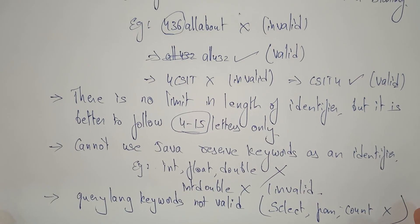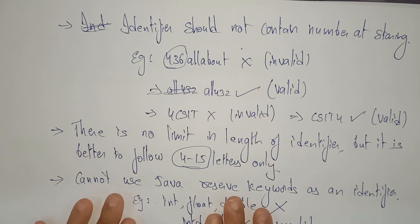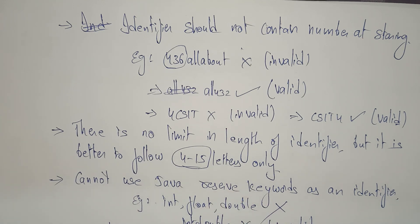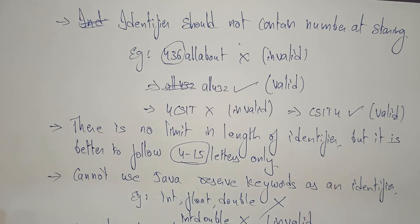If you follow these rules, you can avoid compile-time errors while declaring identifiers. We have to follow these rules carefully while writing programs. If an identifier is not declared properly, compile-time errors will occur. Thank you.